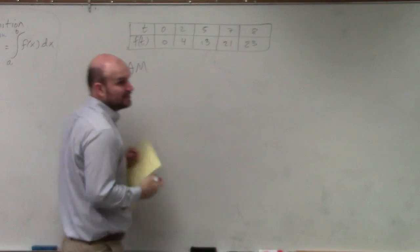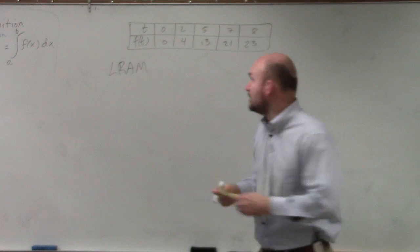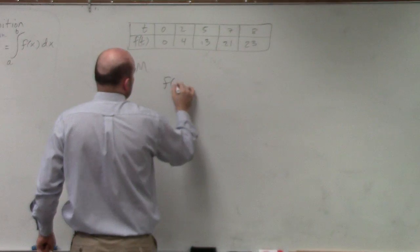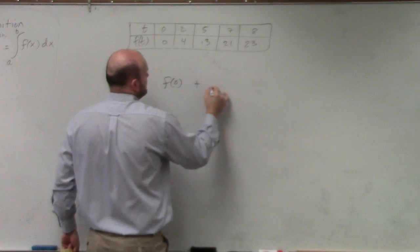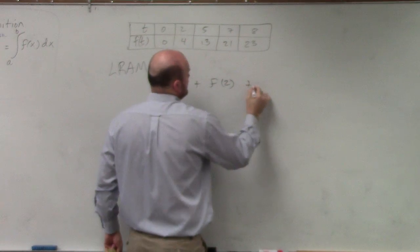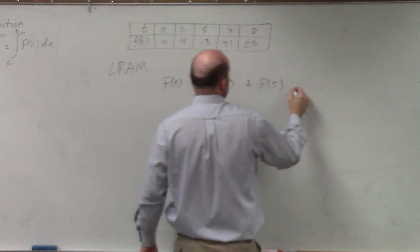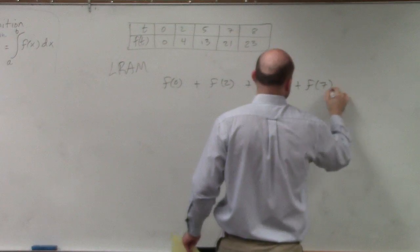Then basically what we're going to want to do is say, all right, well, how many rectangles can we start off with? Well, we're going to have f of 0, plus f of 2, plus f of 5, plus f of 7.